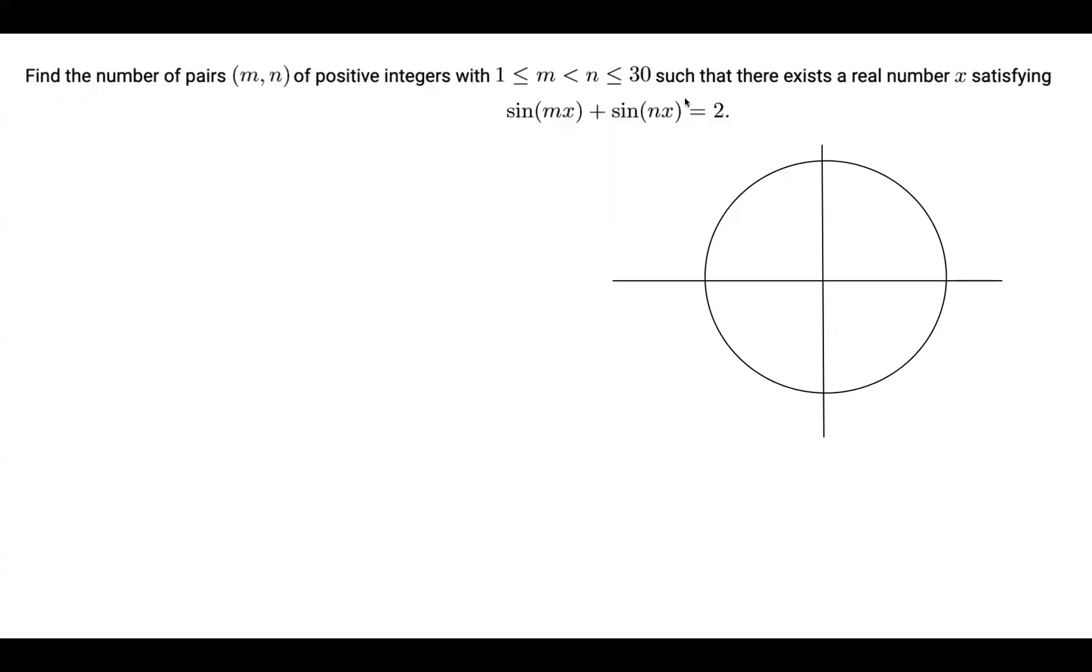Hello everybody, today we will be solving problem 7 of the 2021 AME 10A. The problem reads: find the number of pairs (m,n) of positive integers with 1 ≤ m < n ≤ 30 such that there exists a real number x satisfying sin(mx) + sin(nx) = 2.